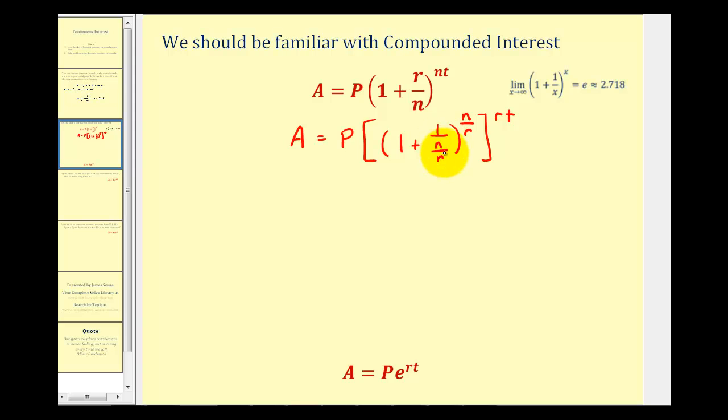Now notice we have n divided by r here and n divided by r here. We're going to let x equal n divided by r and perform a substitution. If we do that, we can write this as A equals P times the quantity one plus one over x, and notice how the exponent here would also be x raised to the power of r times t.